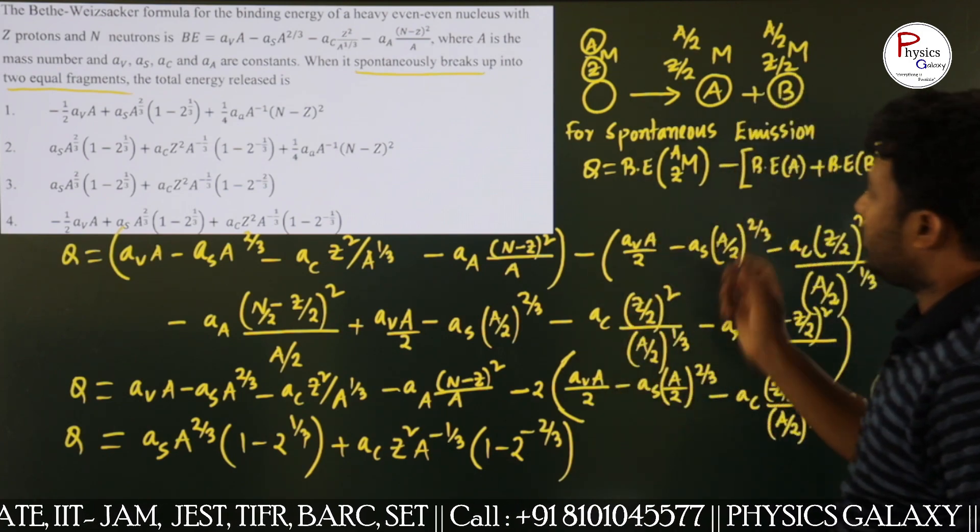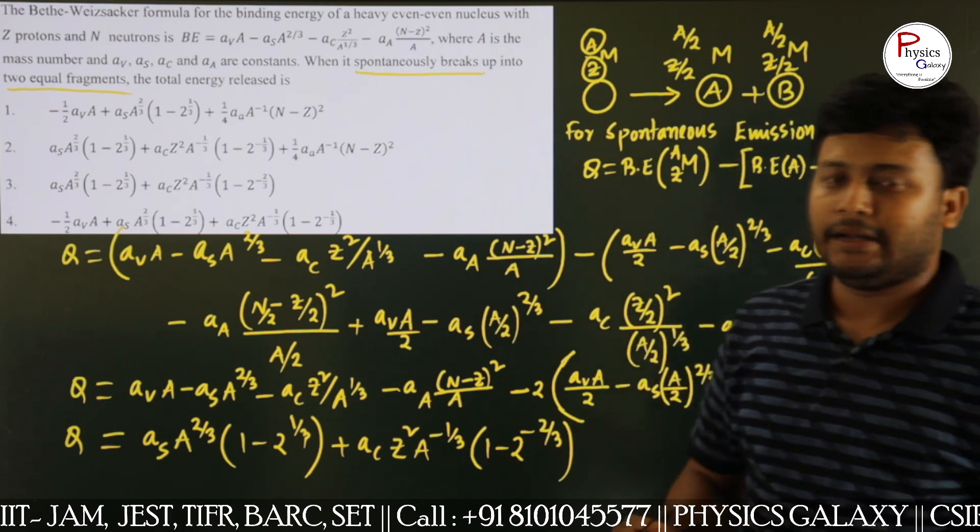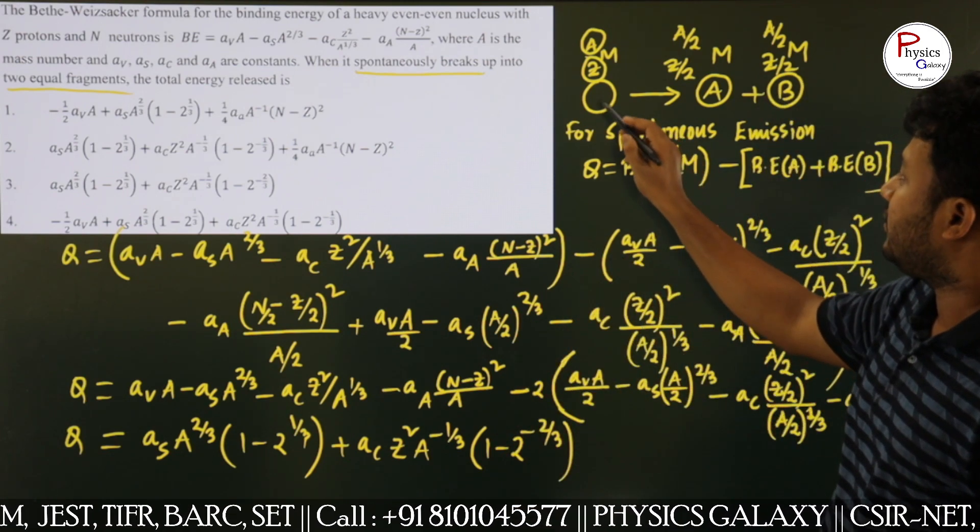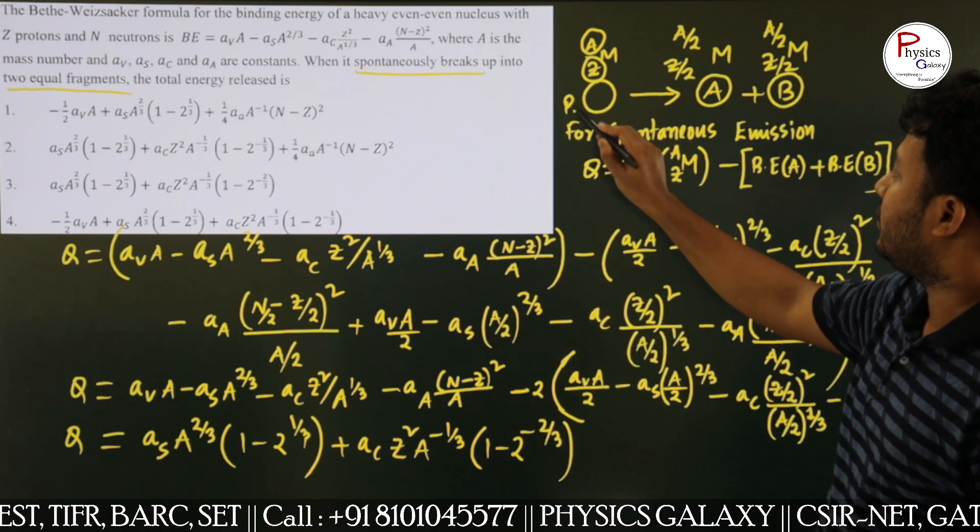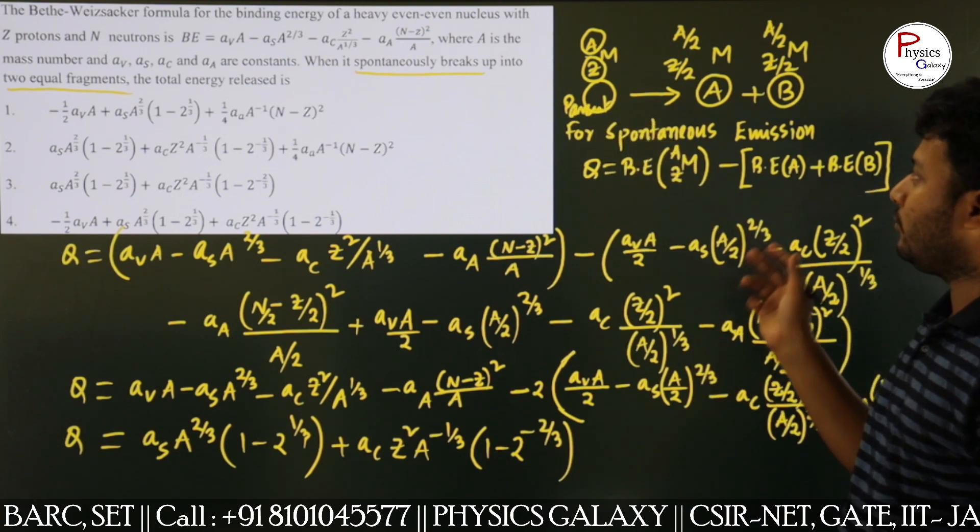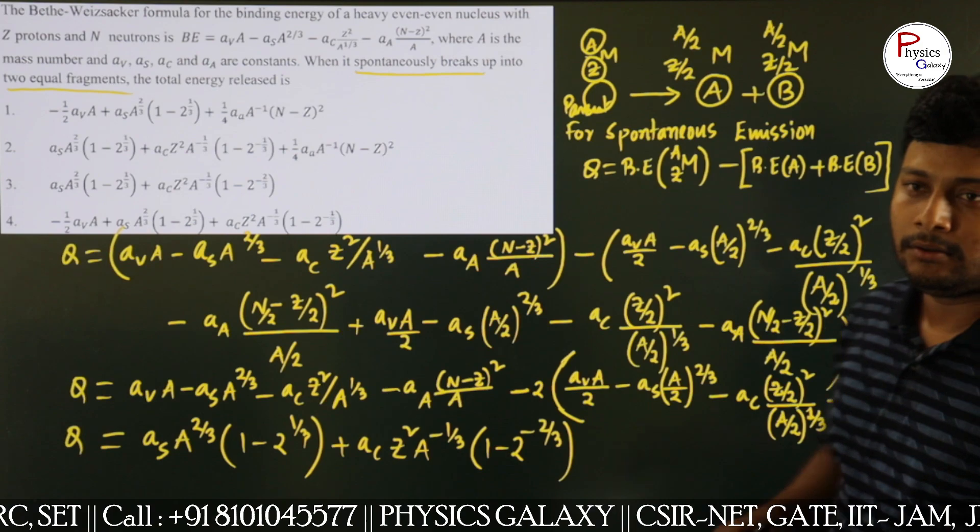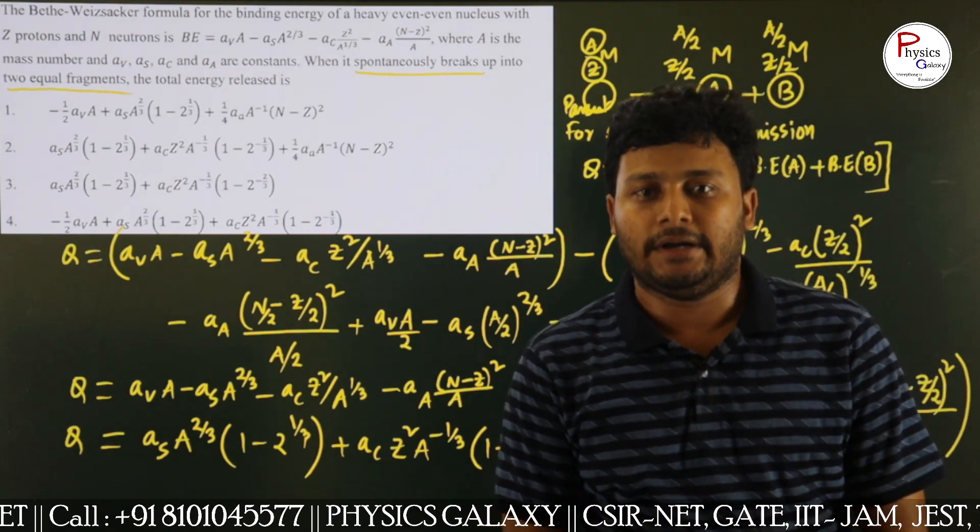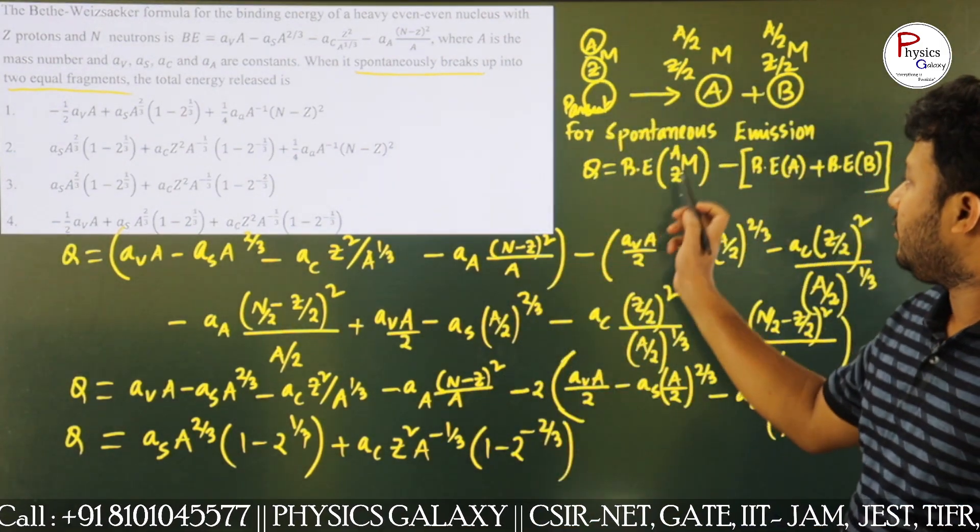For spontaneous emission, the value is binding energy. This is the parent nuclei, so this is binding energy minus the total product binding energy. This difference is for spontaneous emission.